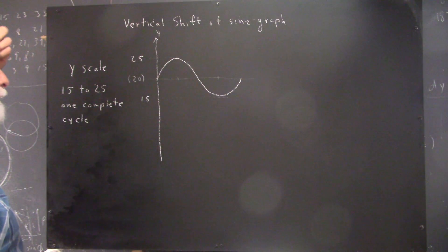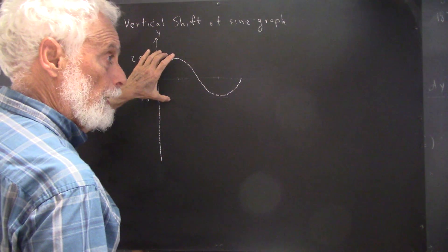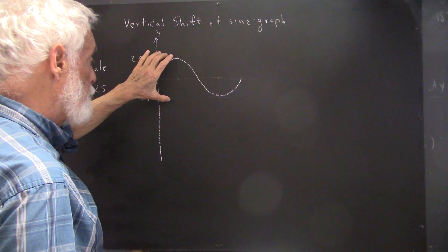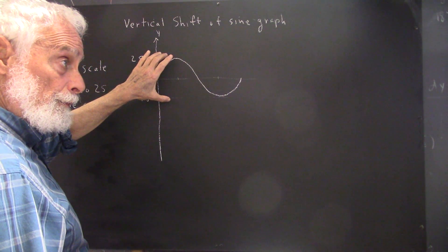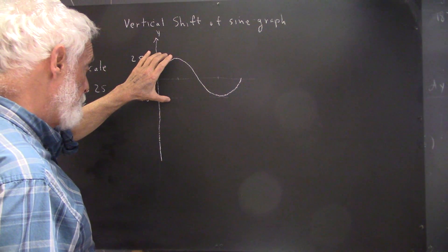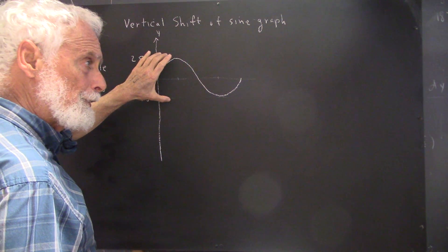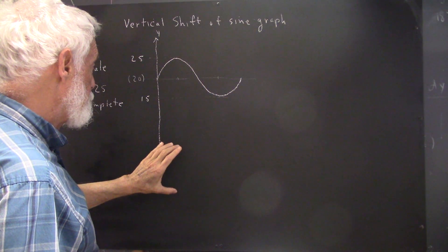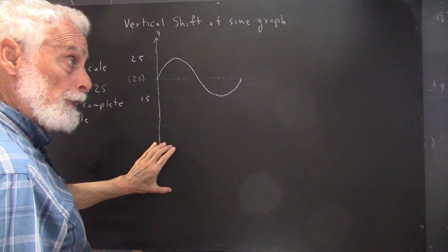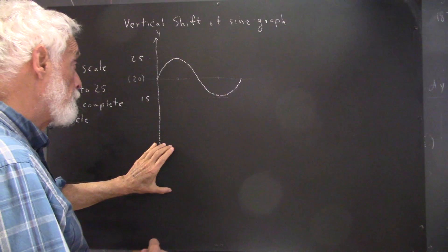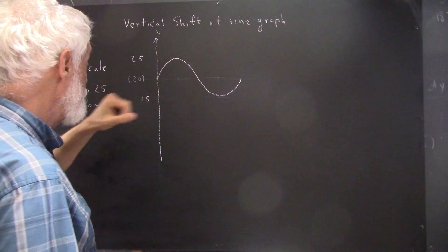Well, what we're going to do about this is, we're going to regard this graph as the graph of a sine function constructed in the usual manner, but with the axis down here someplace, so that we have to raise the function from wherever it is in our initial construction to this position.